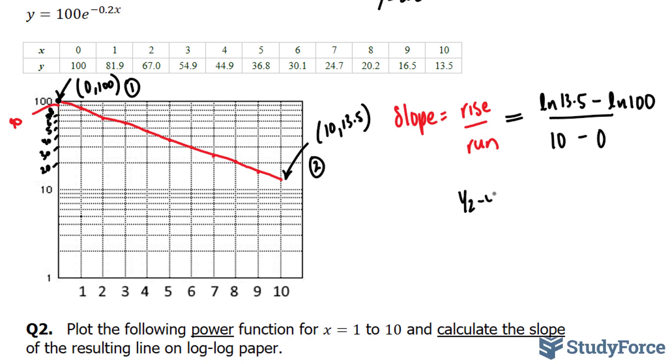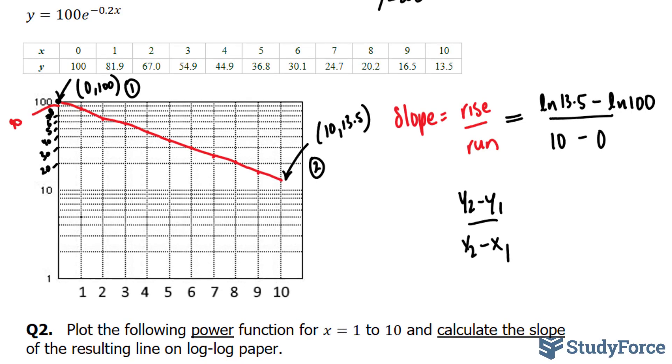And the formula for slope is rise over run. In other words, y2 minus y1 over x2 minus x1. And the reason why we ln these numbers is because on the y axis, the scale is logarithmic. If the scale were linear, we would simply subtract the two y coordinates.